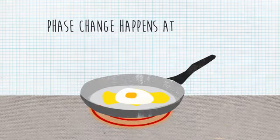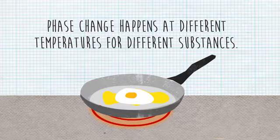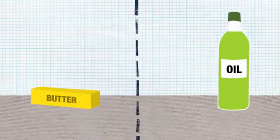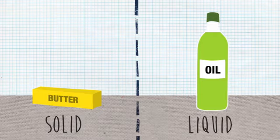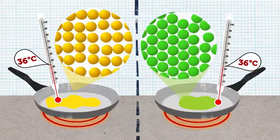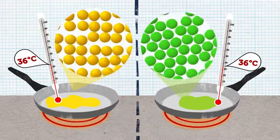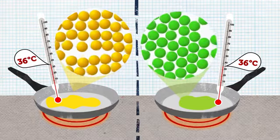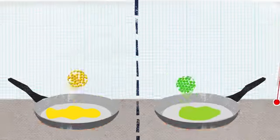Phase change happens at different temperatures for different substances. Sometimes two substances at the same temperature can be in different phases. And sometimes two substances at the same temperature can be in the same phase. It just depends on the temperature and the substance.